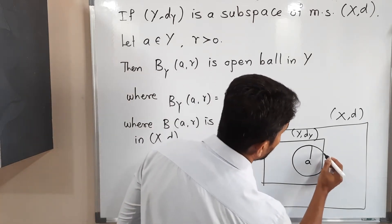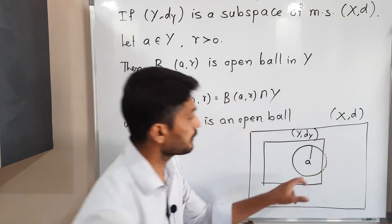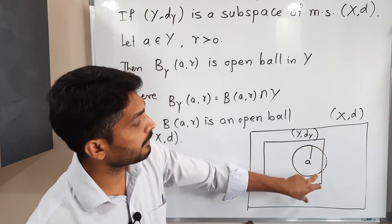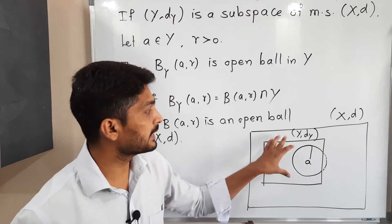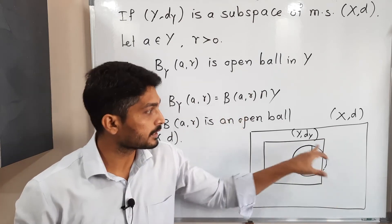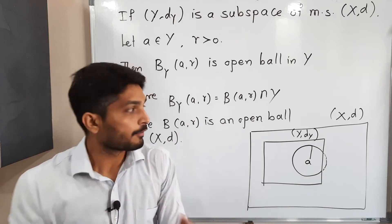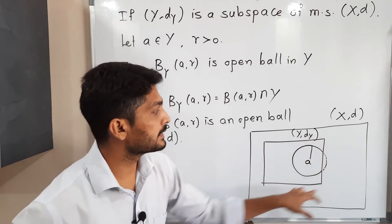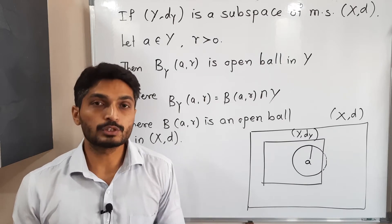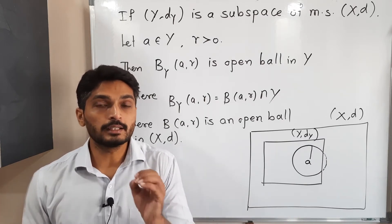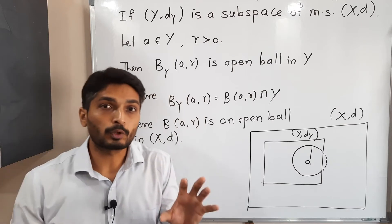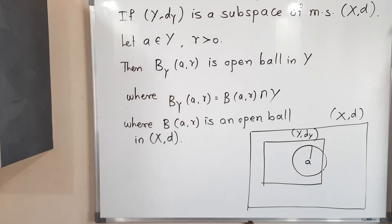The key relation is: B_Y(a,r) = B_X(a,r) ∩ Y. That is, when we have an open ball in subspace Y, it equals the open ball in X intersected with Y. If you consider the complete ball in X and take its intersection with Y, you get just the portion inside Y - and that is the open ball in the subspace (Y,dY). Please keep this in mind as we will use it in our results. Make a screenshot and then we will go further.